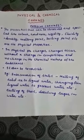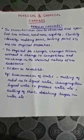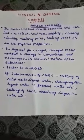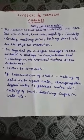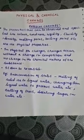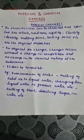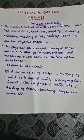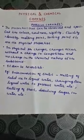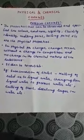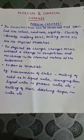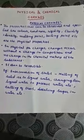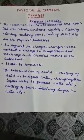What is a physical change? The properties that we can visually observe, like color, hardness, rigidity, fluidity, density, melting point, boiling point, etc., are called physical properties. In case of physical changes, there will be no change in the composition.